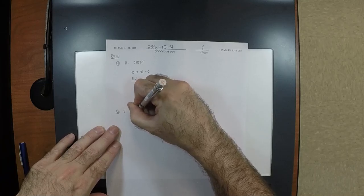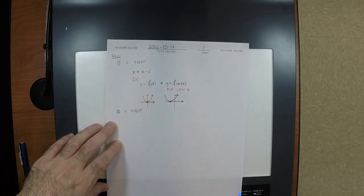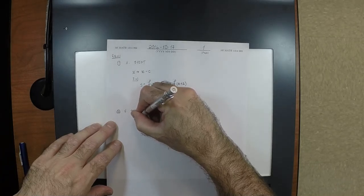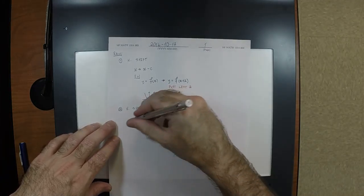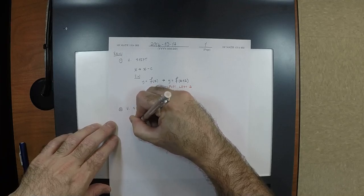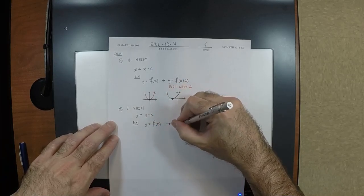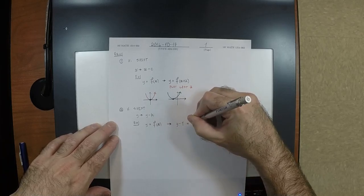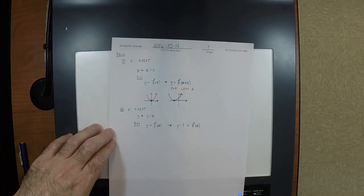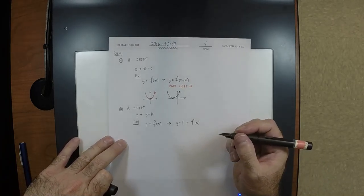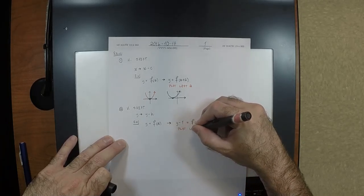Vertical shift. Horizontal shift plays with x — what does vertical shift play with? With y. So now it would be y transforms to y minus k. There's nothing special about k. So for example, y is f of x transforms to y minus k is f of x. The plot moves up one.